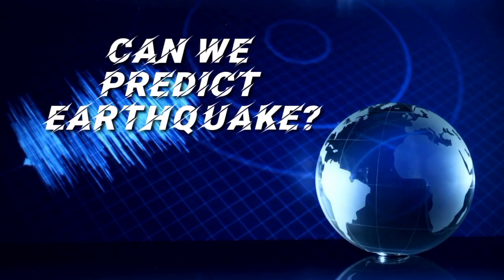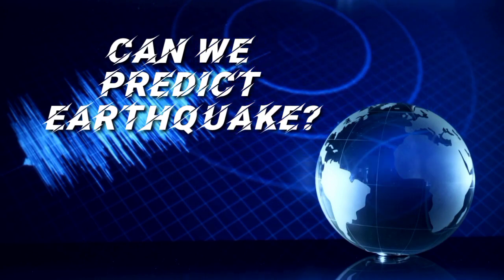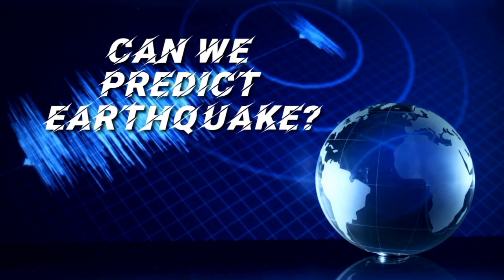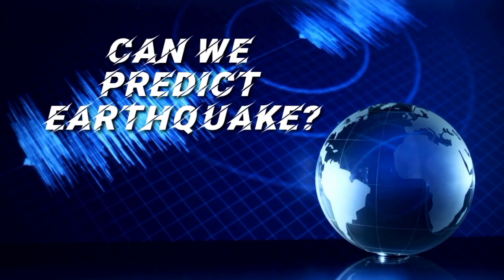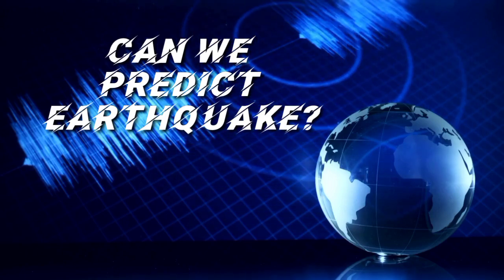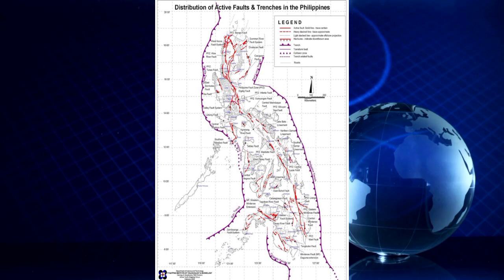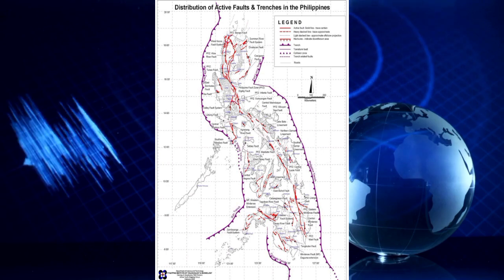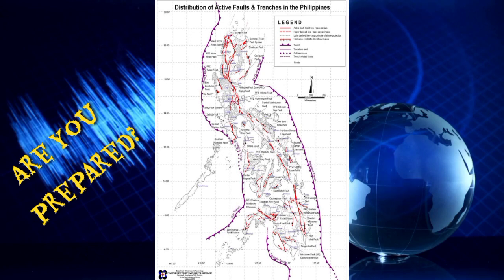Can we predict earthquakes? Seismologists cannot predict the exact time and date of an earthquake, but they can predict the places where an earthquake will occur due to the presence of faults. Study the map and find out where you live. Is there an active fault passing by your town, province, or region? If so, are you and your family prepared for the occurrence of an earthquake?